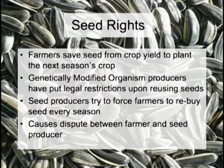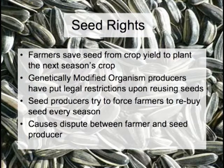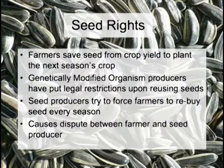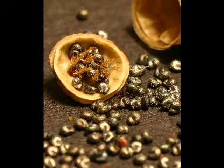One issue is seed ownership. Farmers save seed from crop yield to plant the next season's crop. Genetically modified organism producers have put legal restrictions upon reusing seeds. Seed producers try to force farmers to re-buy seed every season, causing dispute between farmers and seed producers. The primary agricultural issue with genetically modified organisms has to do with ownership. What happens with GMOs is a company owns the right to that gene inside the seed. So by law, if you use a genetically modified organism seed bank, you cannot propagate those seeds, which takes away the very fundamental ability for those farmers to be self-sufficient.